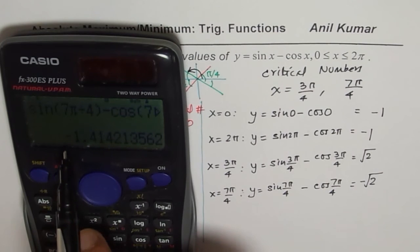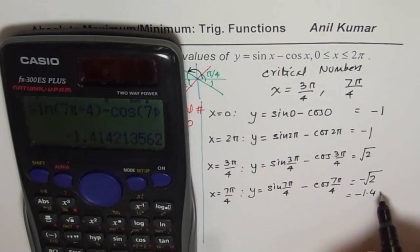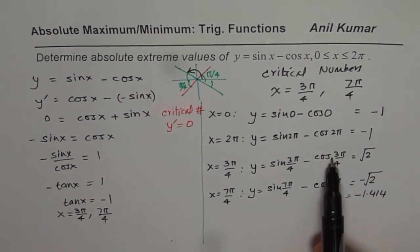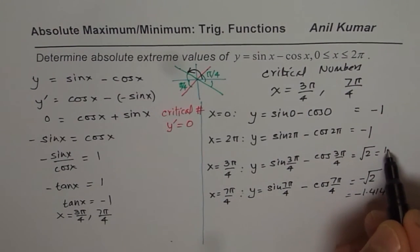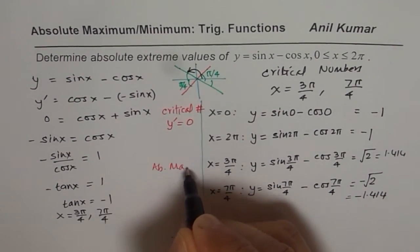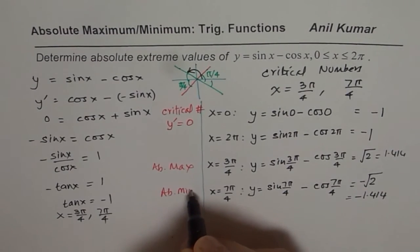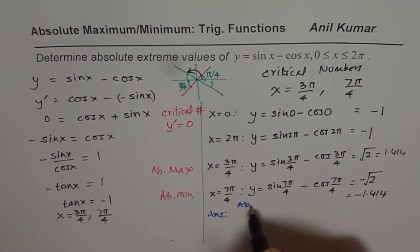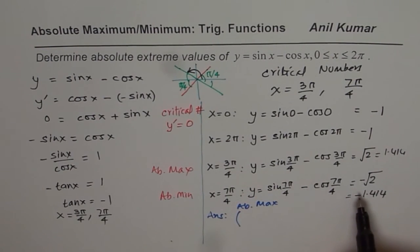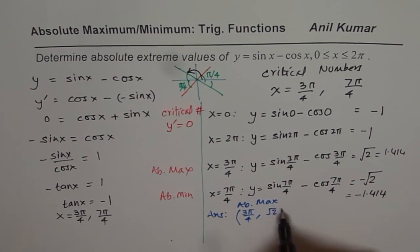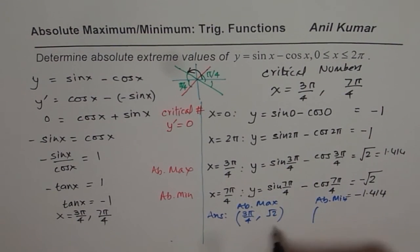You could write these in decimals to compare. Minus square root 2 is approximately minus 1.414, which is more negative, and square root 2 is approximately 1.414, which is greater than 1. So we get our extreme values. Absolute maximum is at x equals 3 pi by 4 with value square root 2, and absolute minimum is at x equals 7 pi by 4 with value minus square root 2.